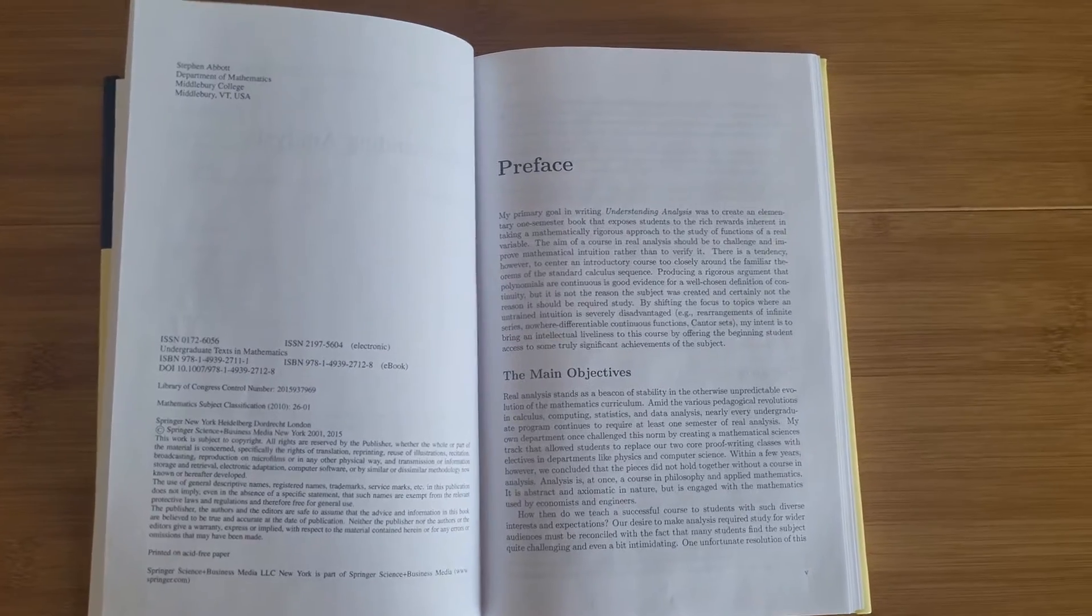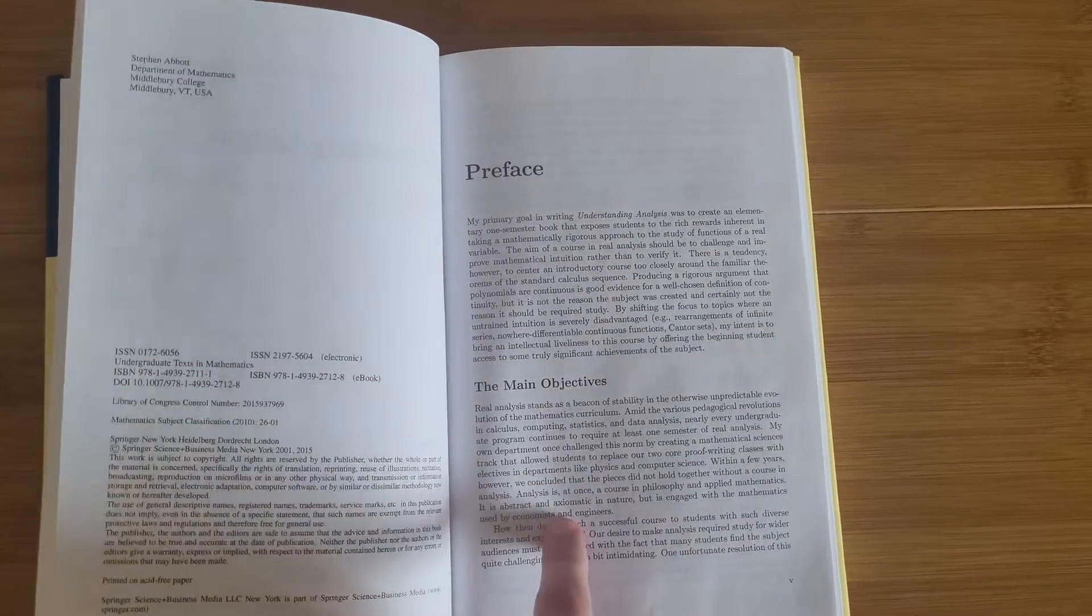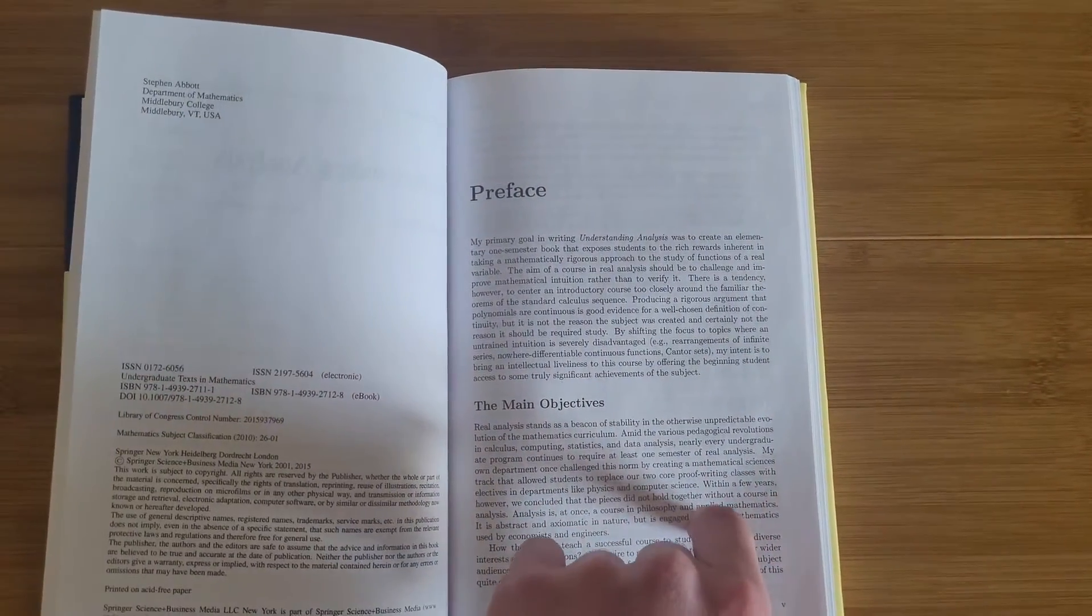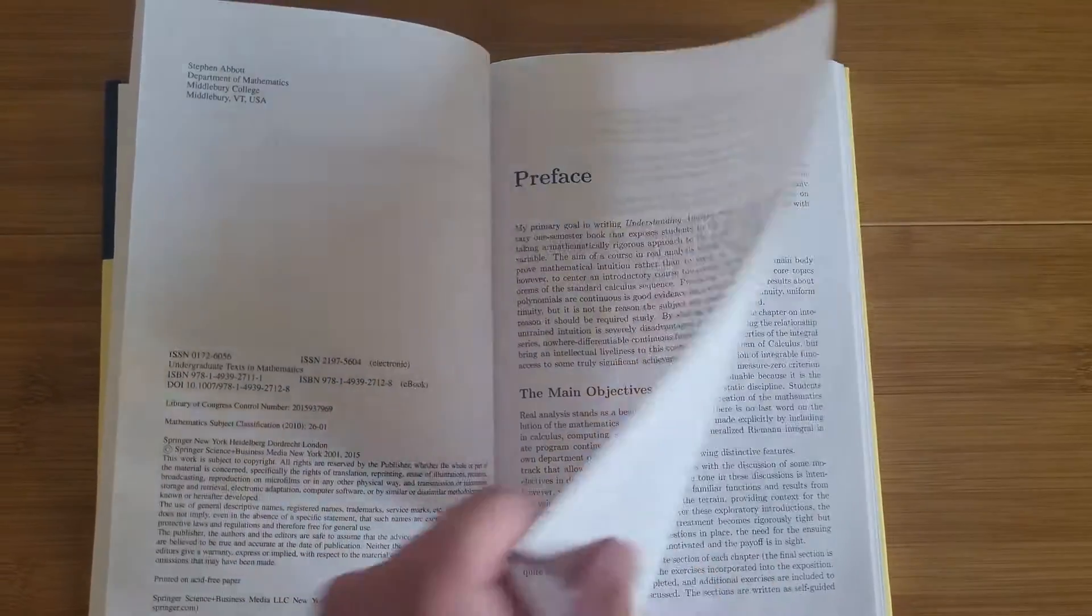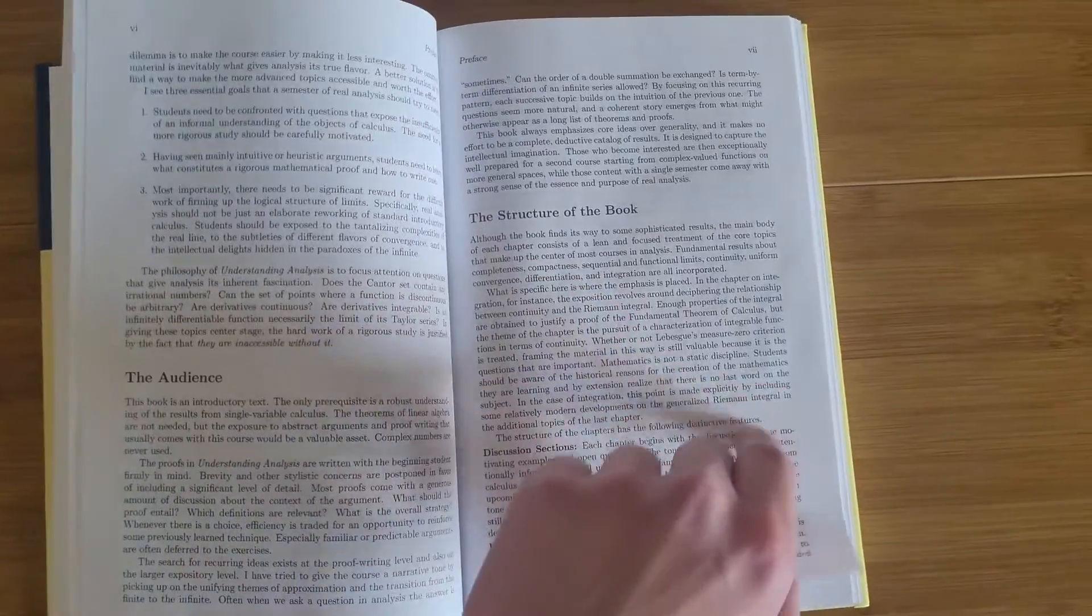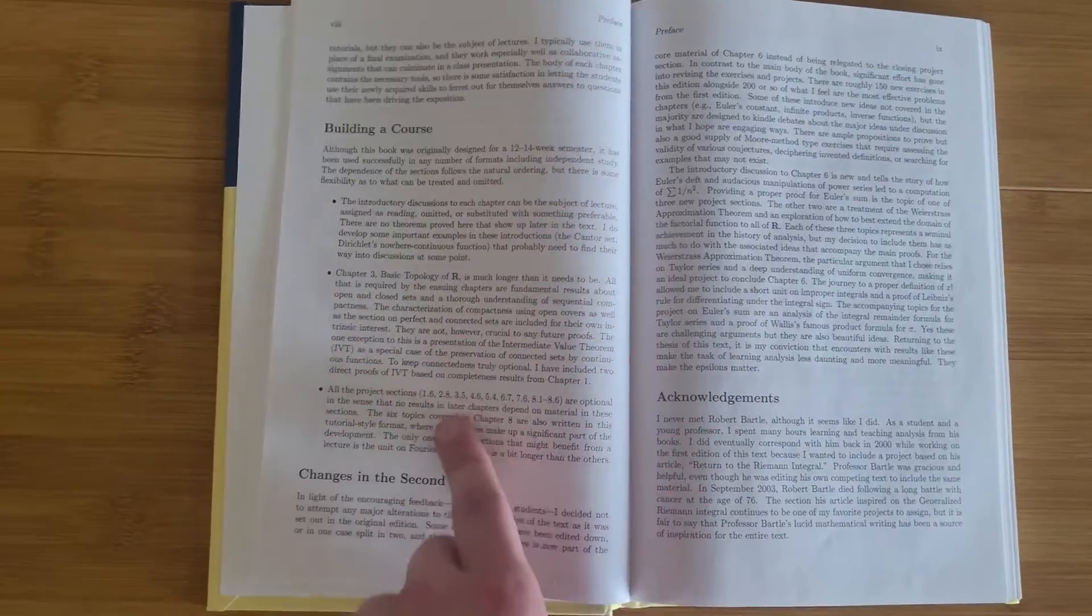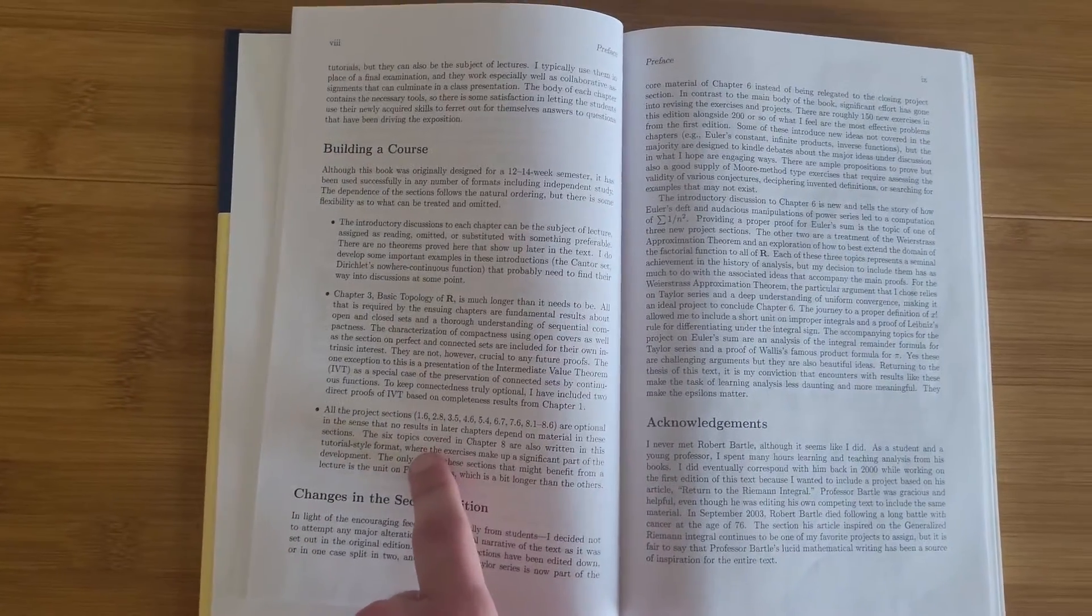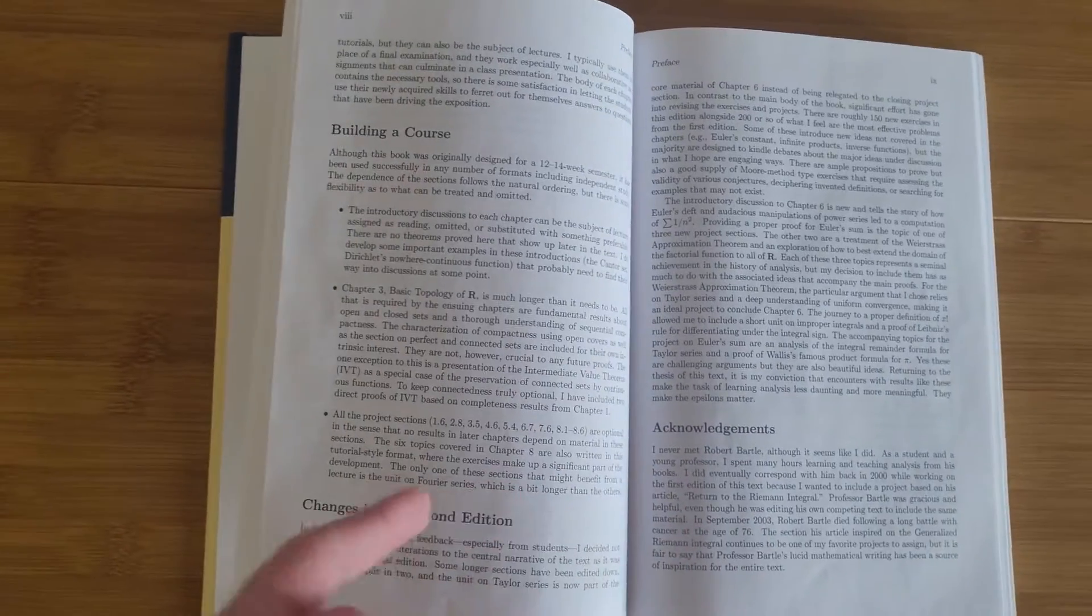Looking at the contents of this book, you're first greeted by the preface, and I definitely recommend reading this section. It talks about the intended audience and how to build a course from this book. This part's very important because it shows you which chapters are necessary and which chapters aren't needed for future sections.